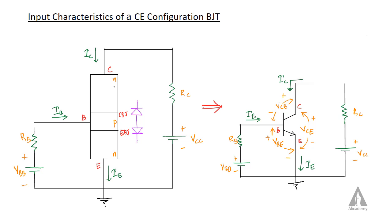In the NPN transistor, the base is the P region, and the collector and emitter regions are N regions. P is analogous to the P region and N to the N region, similar to a diode. Considering emitter and base, the diode will be in one direction with P and N regions. Basically, a transistor is like two diodes connected in series in opposite directions.